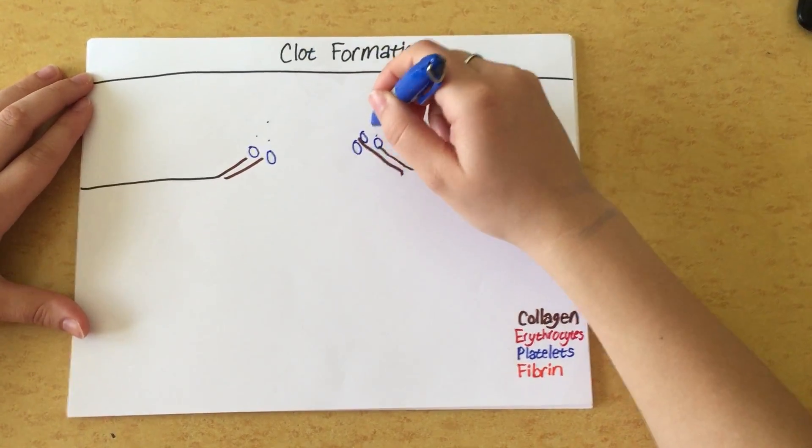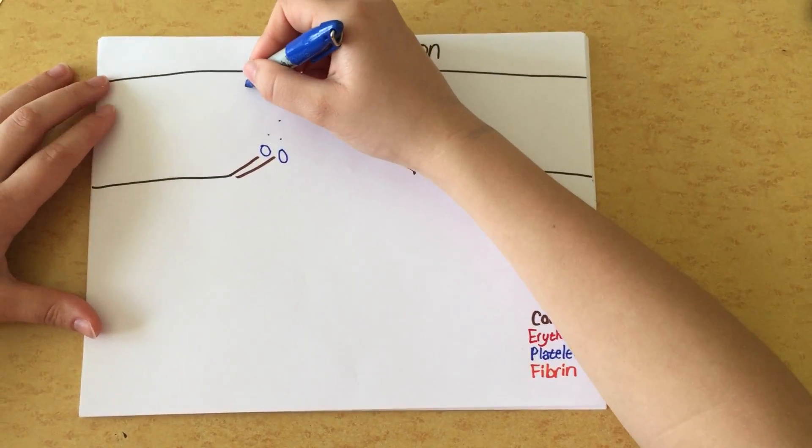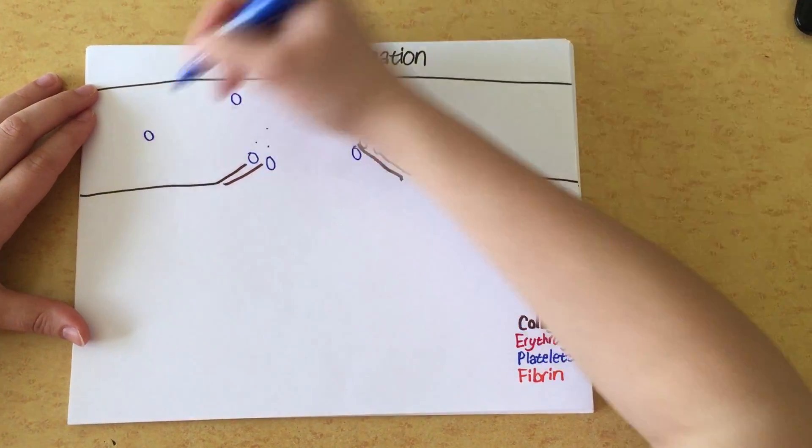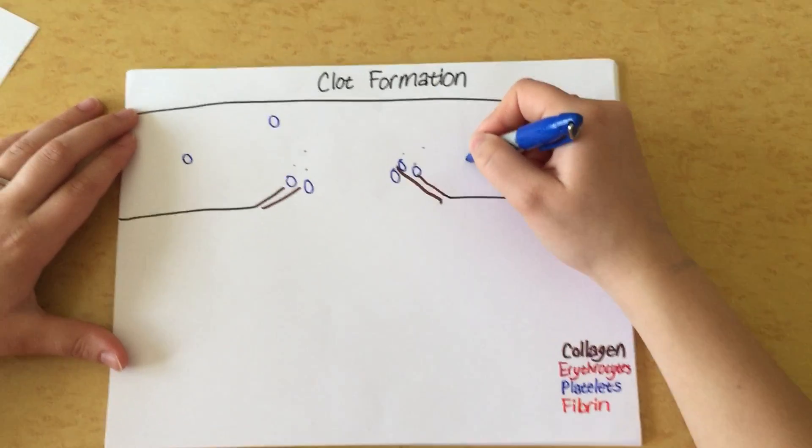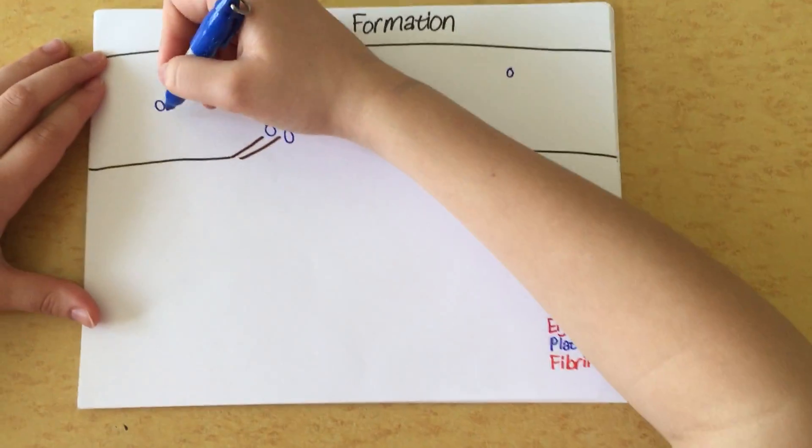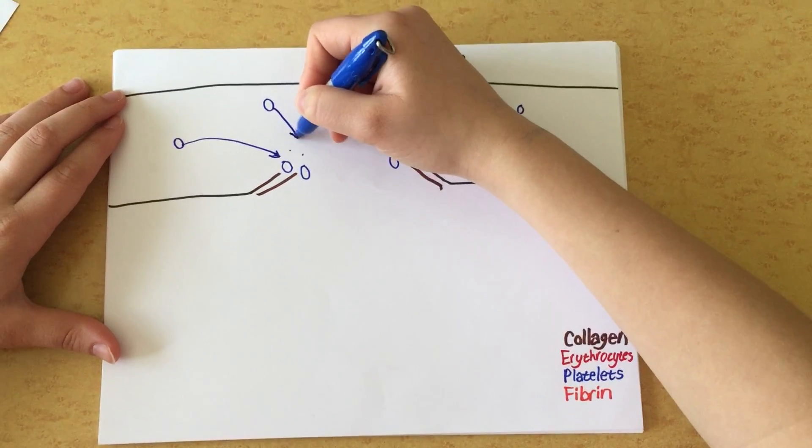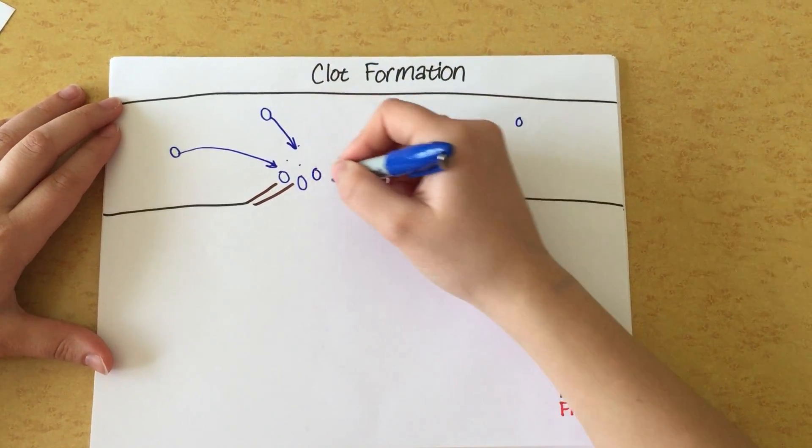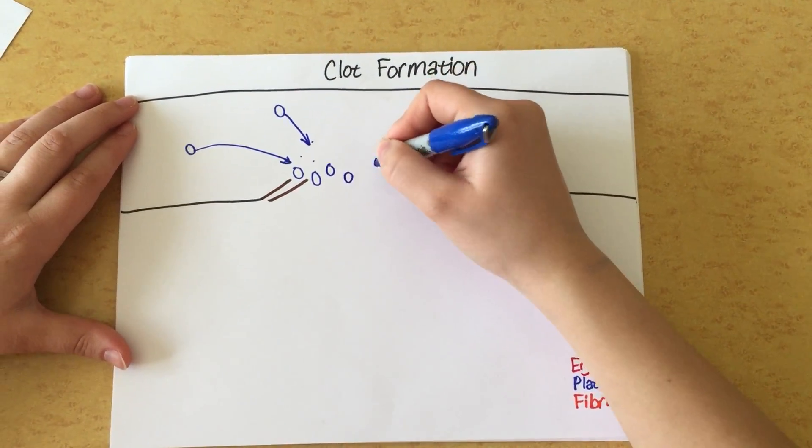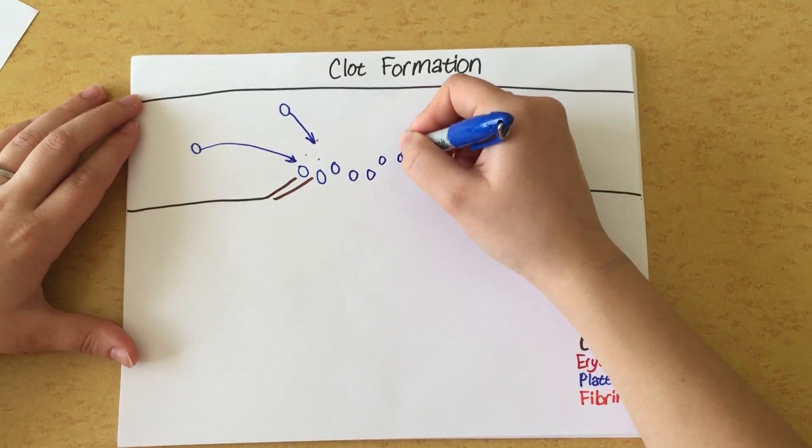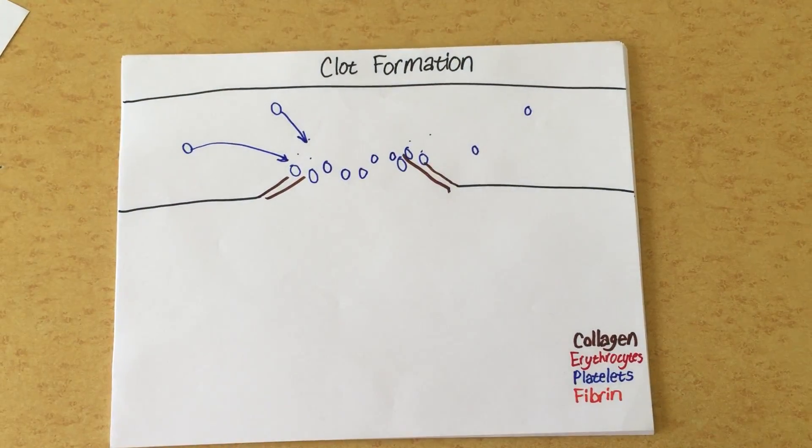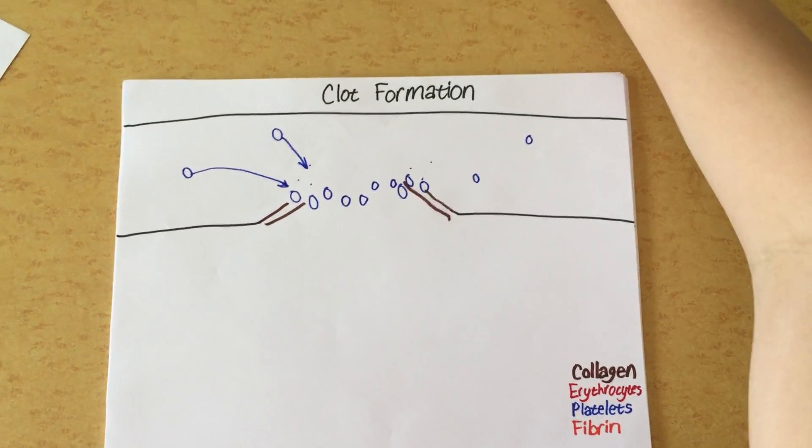When the platelets are bound, they'll also release some other factors that will attract other platelets that are floating in the blood. Because you have some floating around here, these other platelets will be attracted to this location. So you'll get some more platelets here at the site of that blood vessel wall damage that will form a platelet clot.